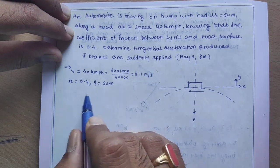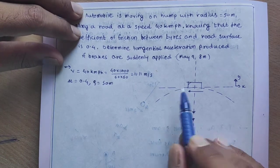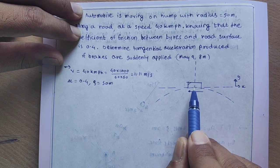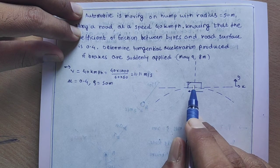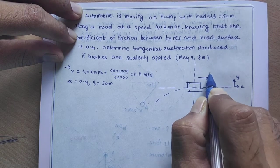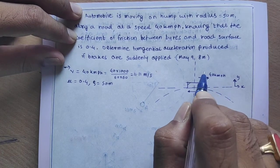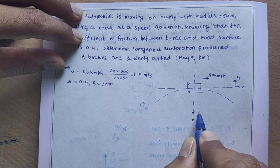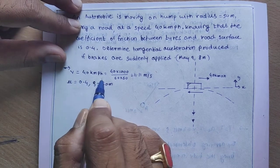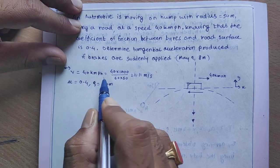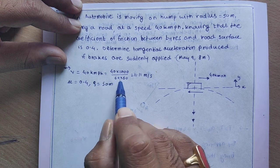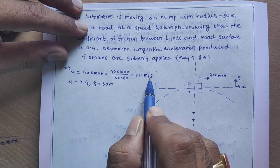So here, we can draw the figure first of all. Consider this is the curve of the road on which the automobile is traveling. It is moving with 40 km per hour in this direction, and the radius of this curve is 50 meters. The given data: velocity is equal to 40 km per hour. We convert that into meter per second: 40 × 1000 divided by 3600, which gives 11.11 meter per second.